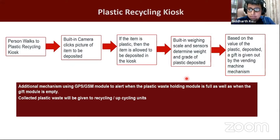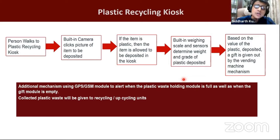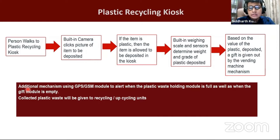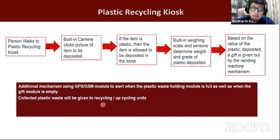Based on the value of the plastic deposit, a gift is given out by the vending machine. The LCD monitor shows the options of gifts that can be redeemed, and the person selects one using the keypad. An additional mechanism using GPS or GSM module can alert when the plastic waste holding module is full or when the gift module is empty, so that gifts can be refilled or plastic waste can be removed manually. The collected plastic waste can then be given to recycling or upcycling companies and organizations.